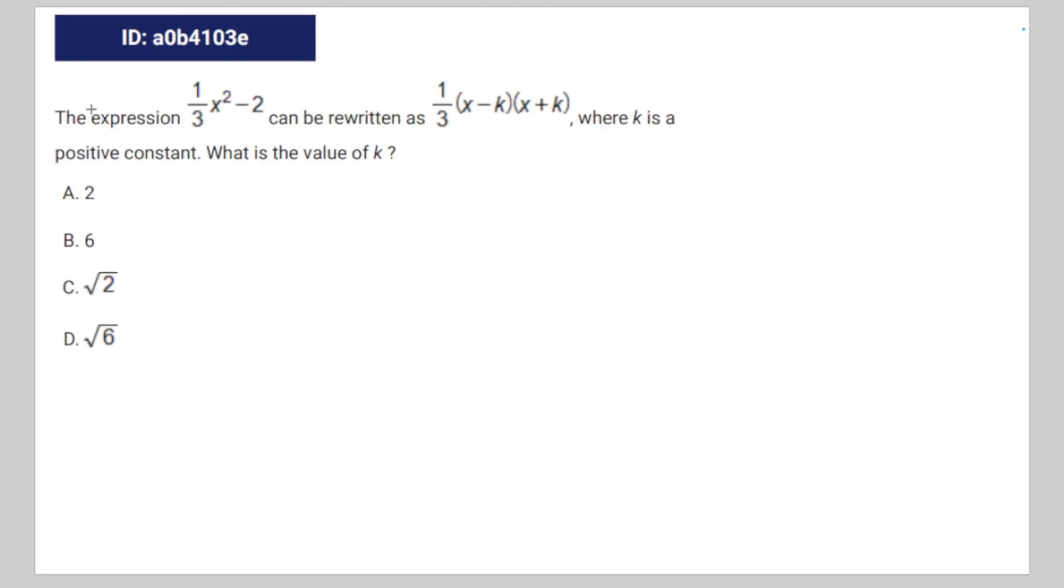We're given the following math question. The expression one third x to the power of 2 minus 2 can be written as one third times x minus k times x plus k, where k is a positive constant. What is the value of k?